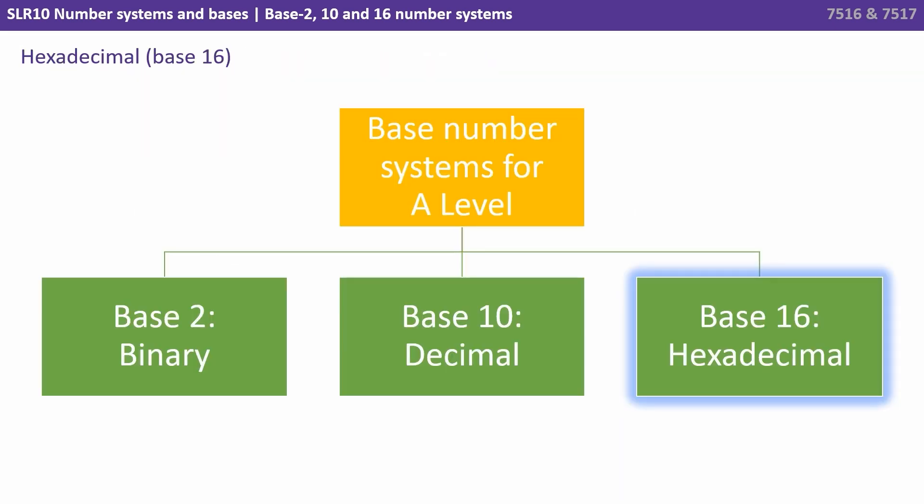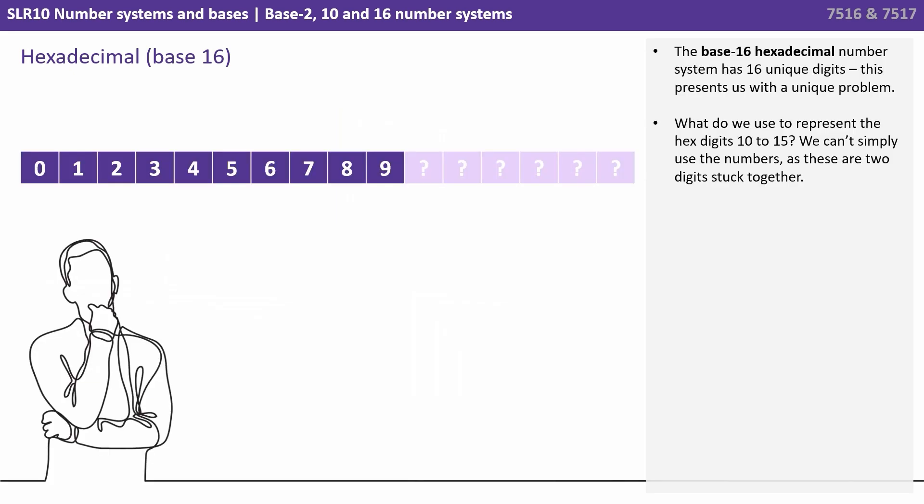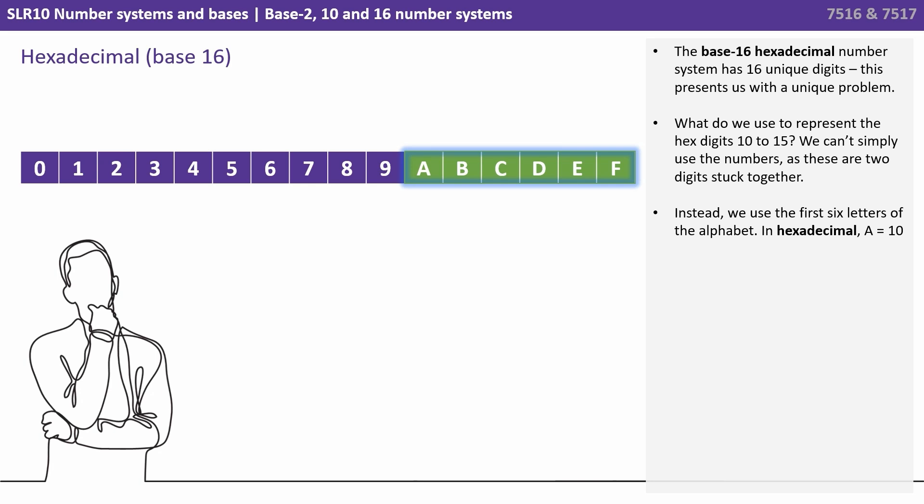Finally, let's look at the base 16 hexadecimal number system. The base 16 number system has 16 unique digits. This presents us with a unique problem. What do we use to represent the hex digits for the decimal numbers 10 through 15? We can't simply use those numbers as these are two separate digits stuck together. Instead, we use the first six letters of the alphabet. In hexadecimal we use A to represent the denary number 10.